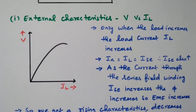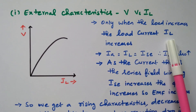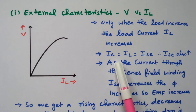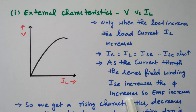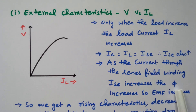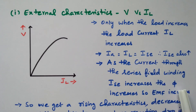Only when the load increases, the load current IL also increases. Since IA = IL = ISE, if ISE increases all currents increase. As the current through the series field winding ISE increases, the flux increases. Flux is directly proportional to the EMF, so the induced EMF also increases. When load increases → load current increases → series field current increases → flux increases → EMF increases. So there is a directly proportional relationship.